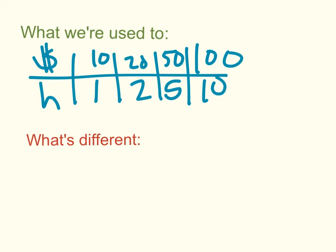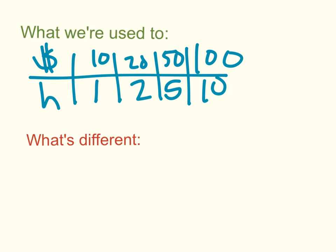So here's the fish method. Again, like we've done in the last two videos, here's what we're used to and here's what's different. We're coming from tables where I give you a huge series and you have to tell me what the inner rainbow is, or that constant of proportionality, or that scale factor.